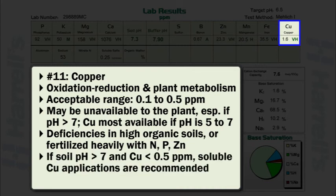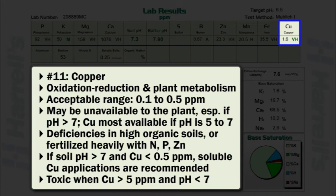If soil pH is greater than 7 and copper is less than 0.5 parts per million, applications of soluble copper are recommended. Toxic conditions may exist when copper levels exceed 5 parts per million in soils with pH values less than 7. Liming to a pH of 7 is the easiest way to resolve copper toxicity.